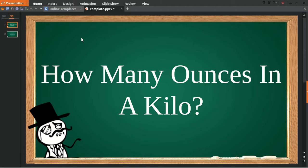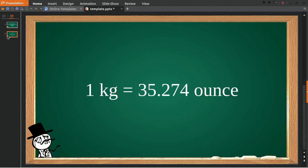How are you today everyone? In today's video we're going to answer this question: how many ounces in a kilo? So this is the answer to the question: one kilogram is equal to 35.274 ounce.